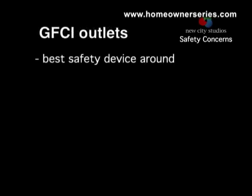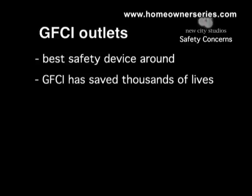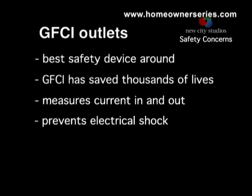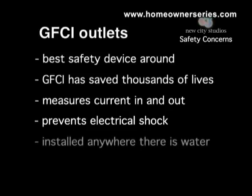Ground fault interruption circuits are one of the best safety devices that have been developed. GFCI devices have saved thousands of lives, most of the time without the person ever even knowing they were in danger. When an electrical device such as a hairdryer is plugged into the GFCI circuit, it measures the electrical flow into and out of the device. If the GFCI circuit detects any difference in the electrical flow, it shuts down the electrical current in a fraction of a second, preventing the current from passing through an individual. GFCI circuits must be installed on every outlet located next to a sink, bathtub, or outdoor outlet — mainly anywhere there is water exposure.